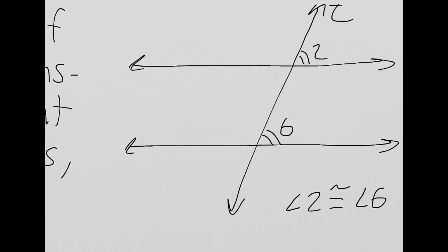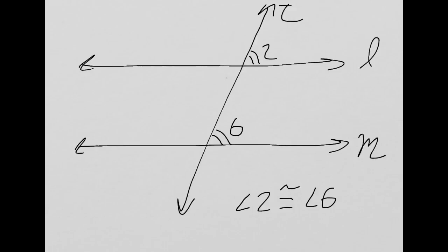Let's take a look at the diagram. So let's say I have line L here and line M here, and they're cut by this transversal T. If I tell you that angle 2 is congruent to angle 6, then we know for sure that these two lines are parallel, and I can mark them using my notation to show that they're parallel.